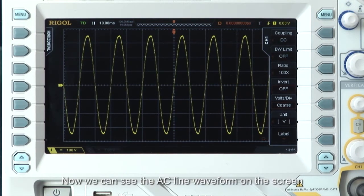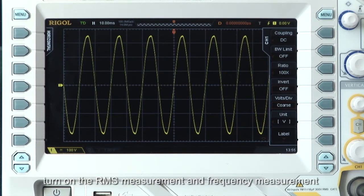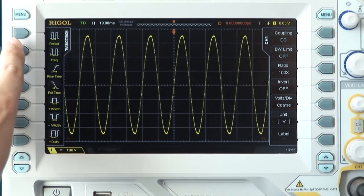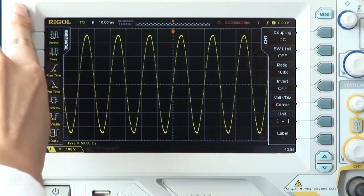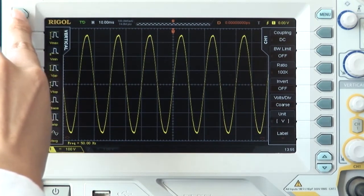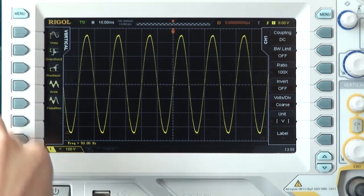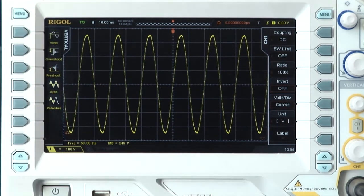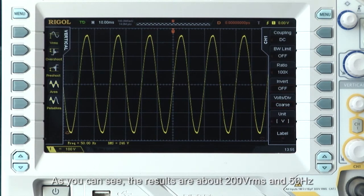Now we can see the AC line waveform on the screen. Turn on the RMS measurement and frequency measurement. As you can see, the results are about 200 volts RMS and 50 hertz.